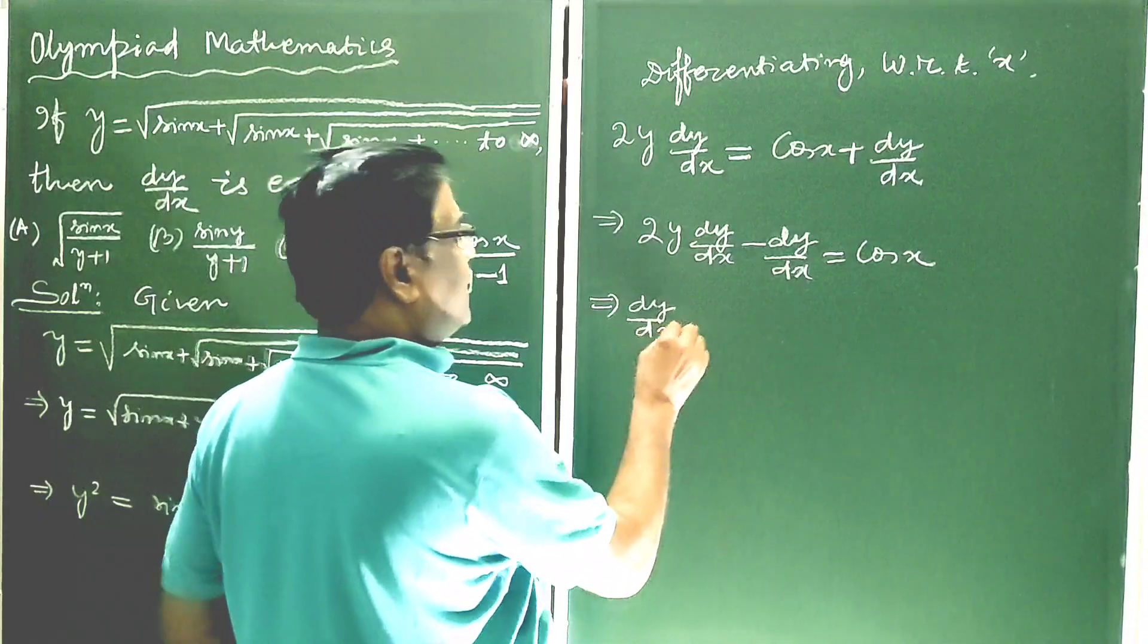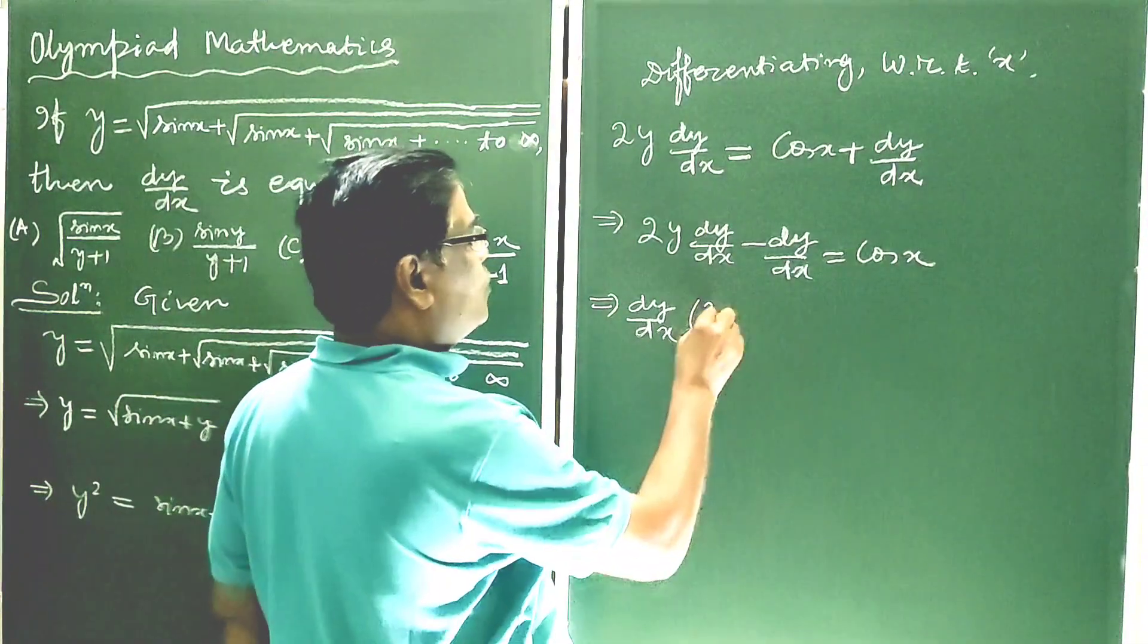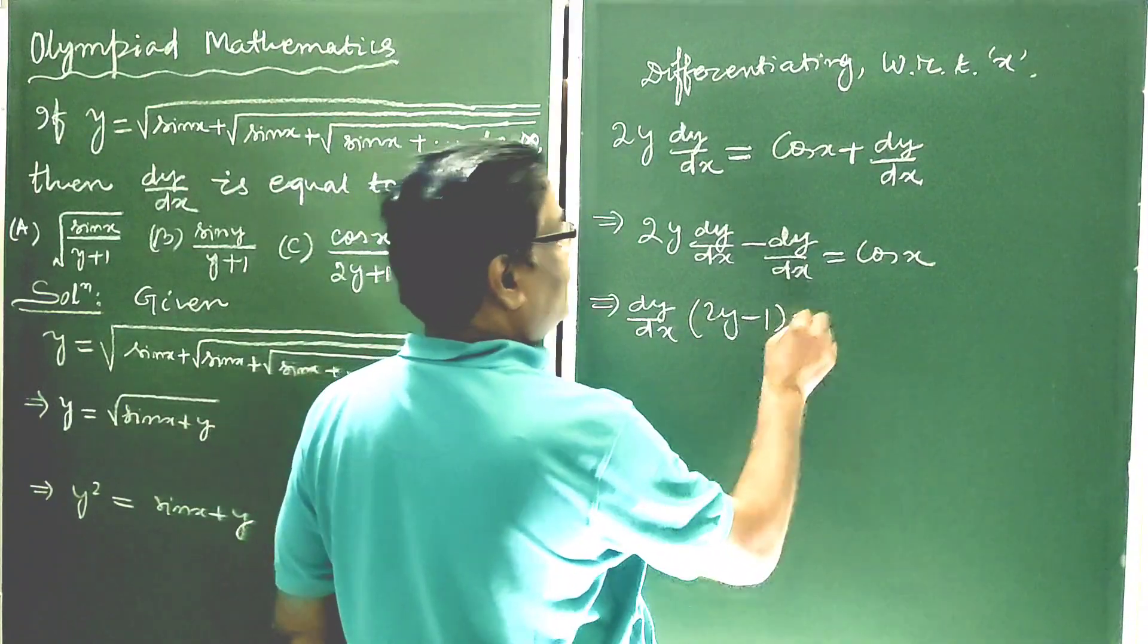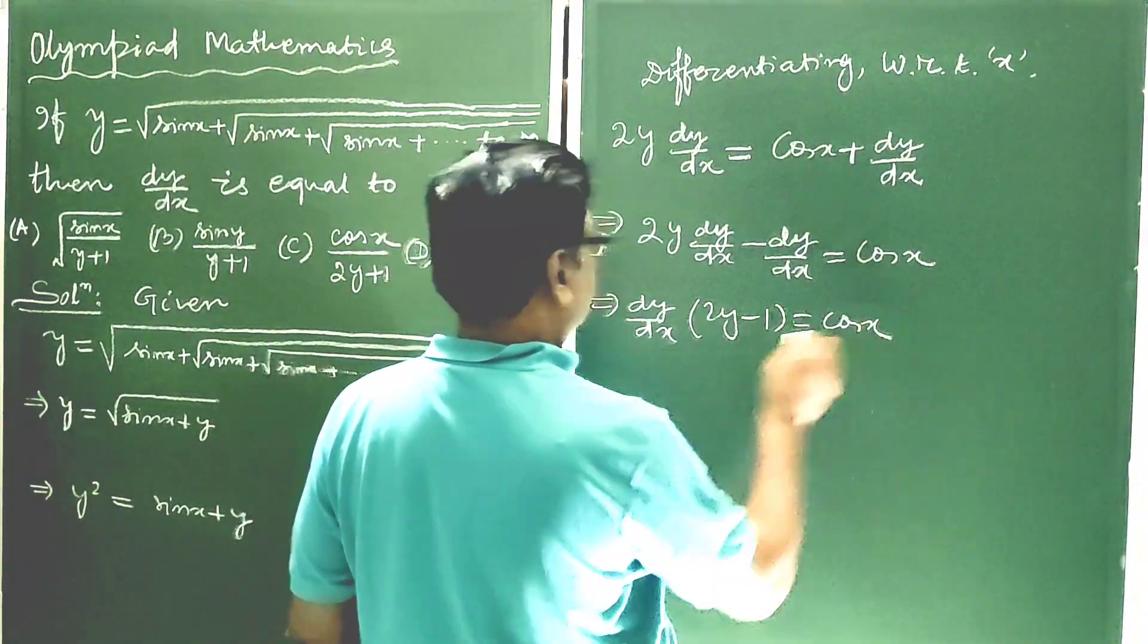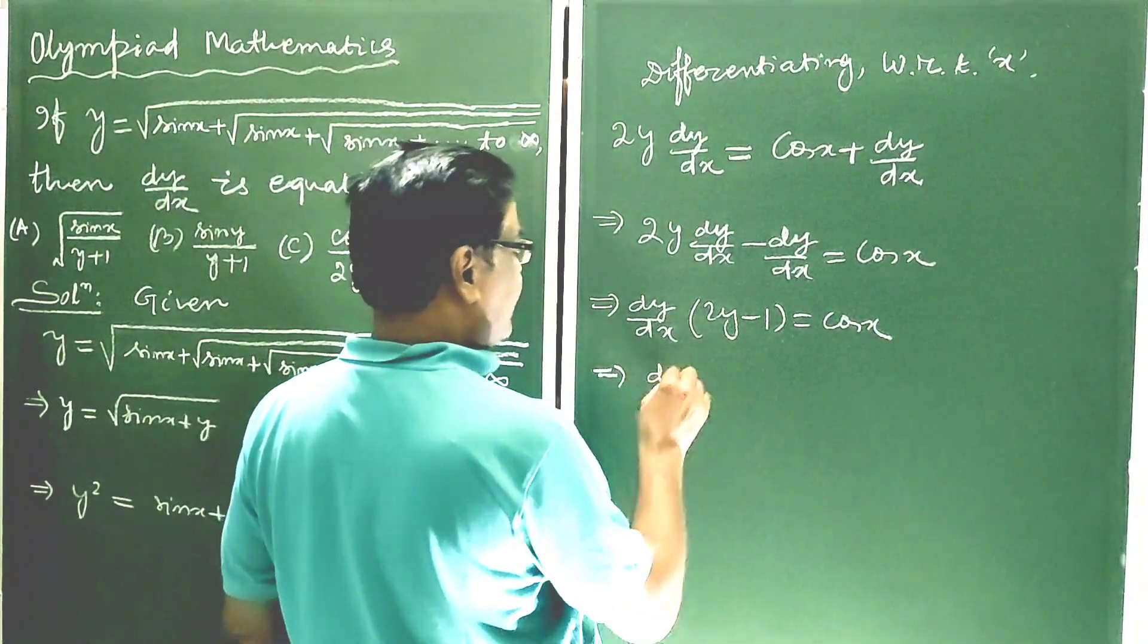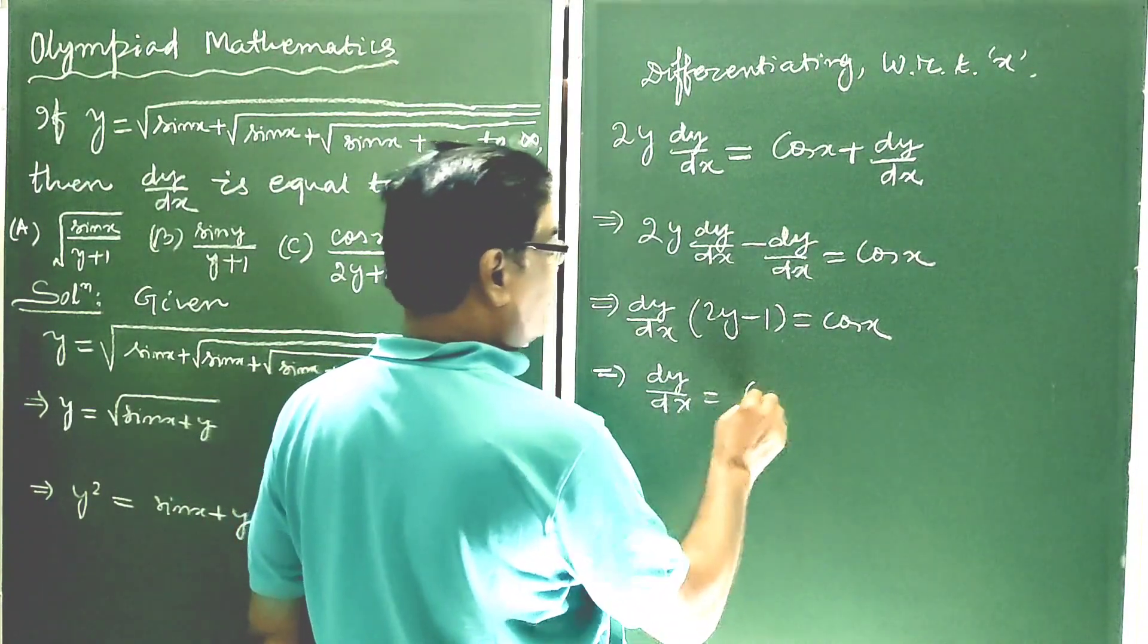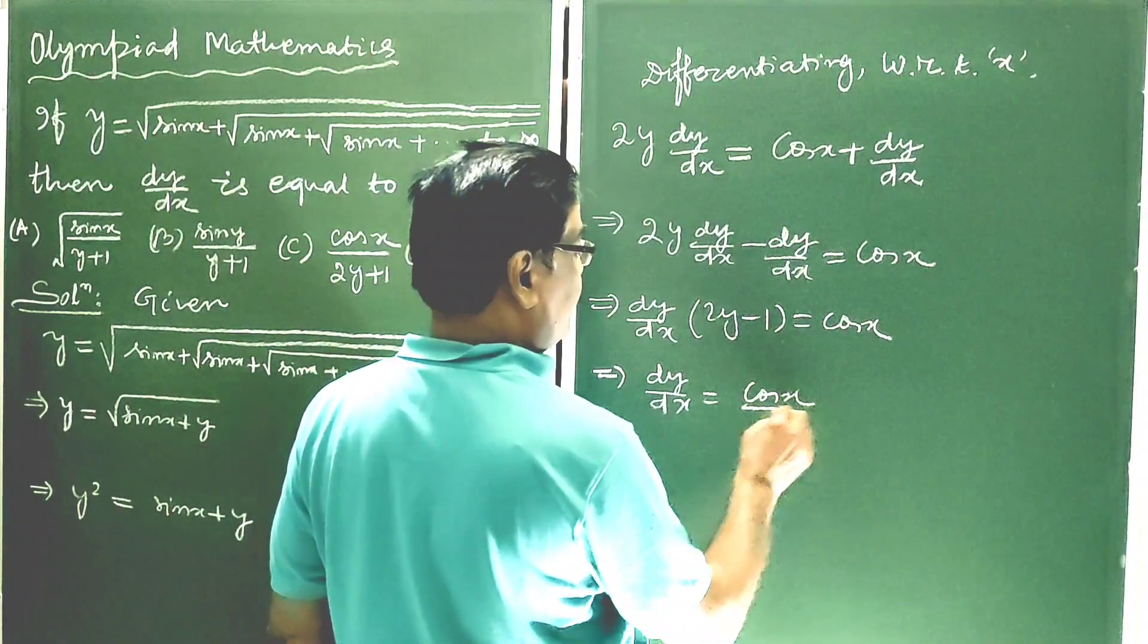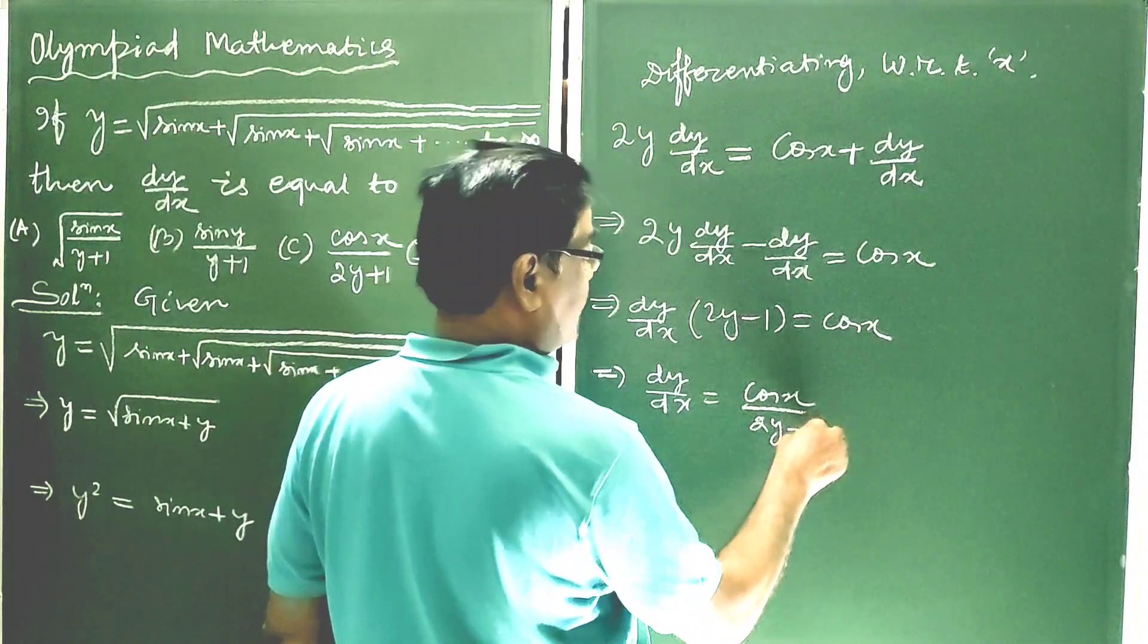Taking dy by dx common, we get dy by dx times (2y minus 1) is equal to cos x. So this implies dy by dx is equal to cos x divided by (2y minus 1).